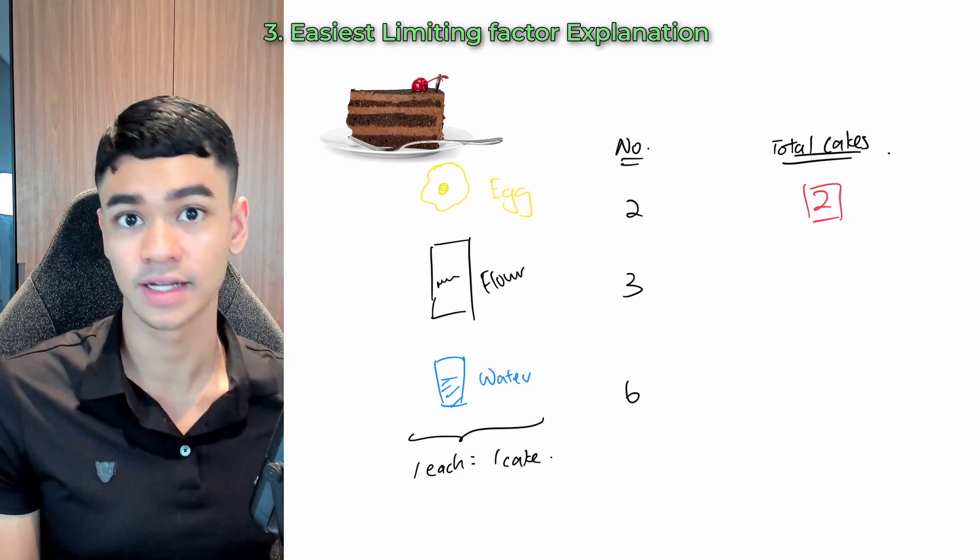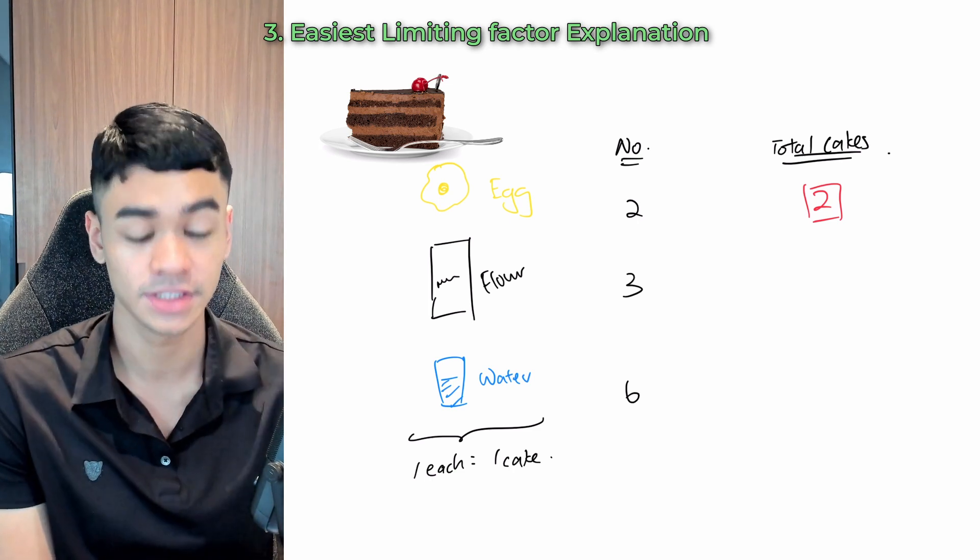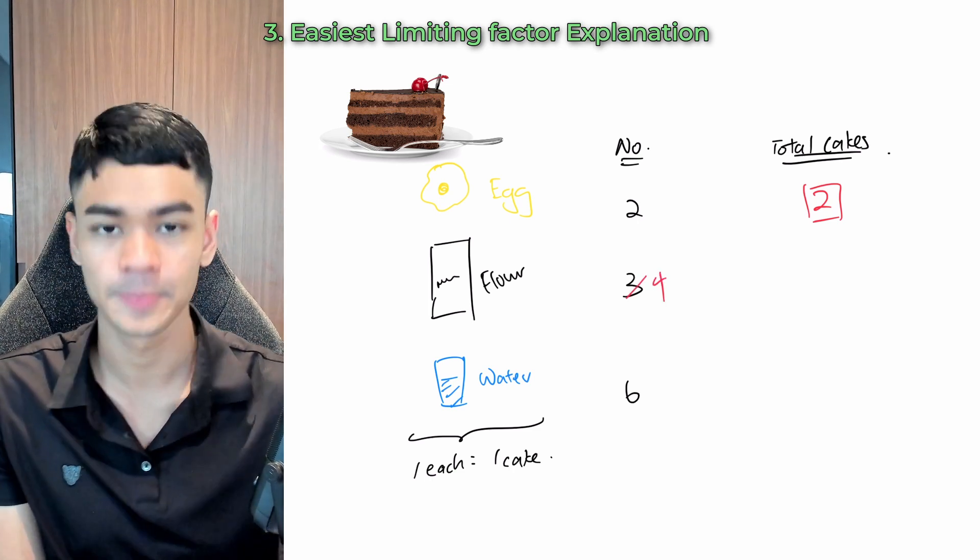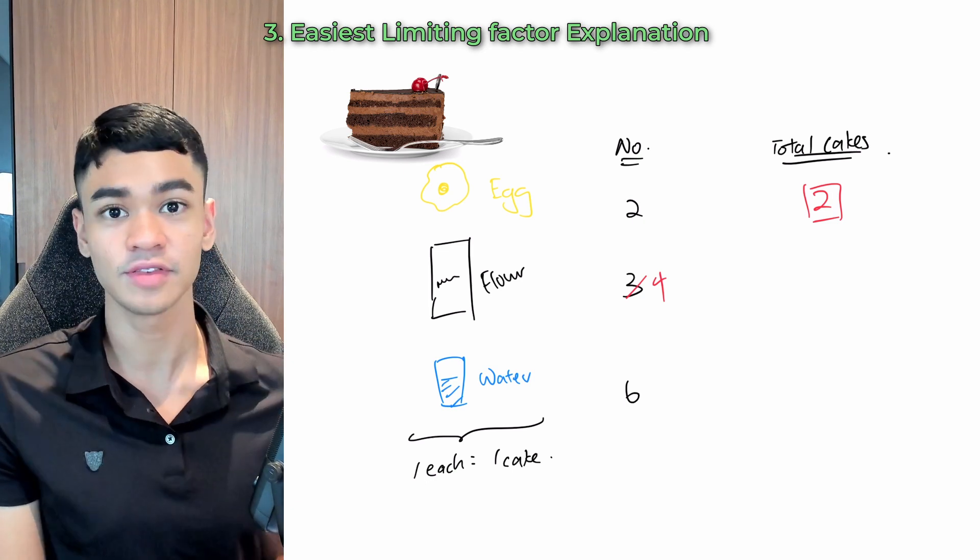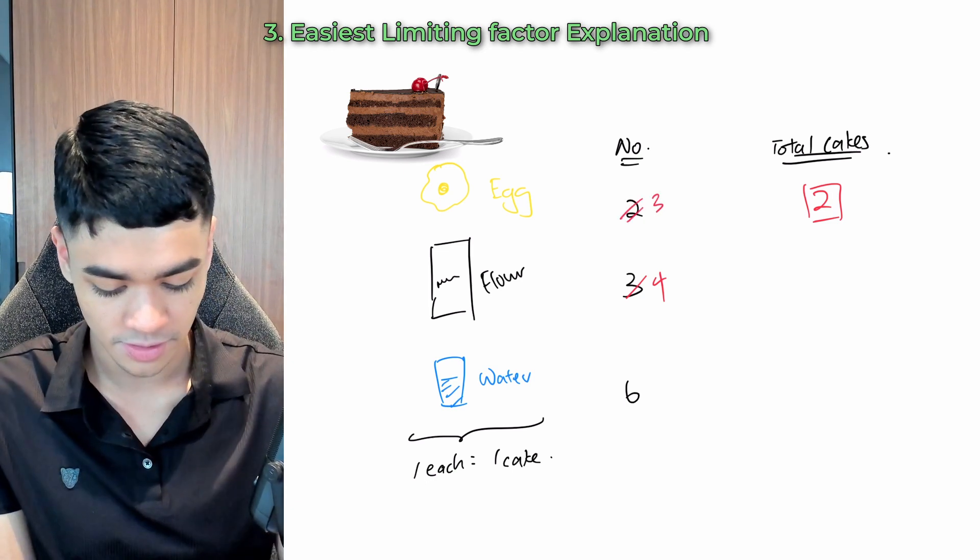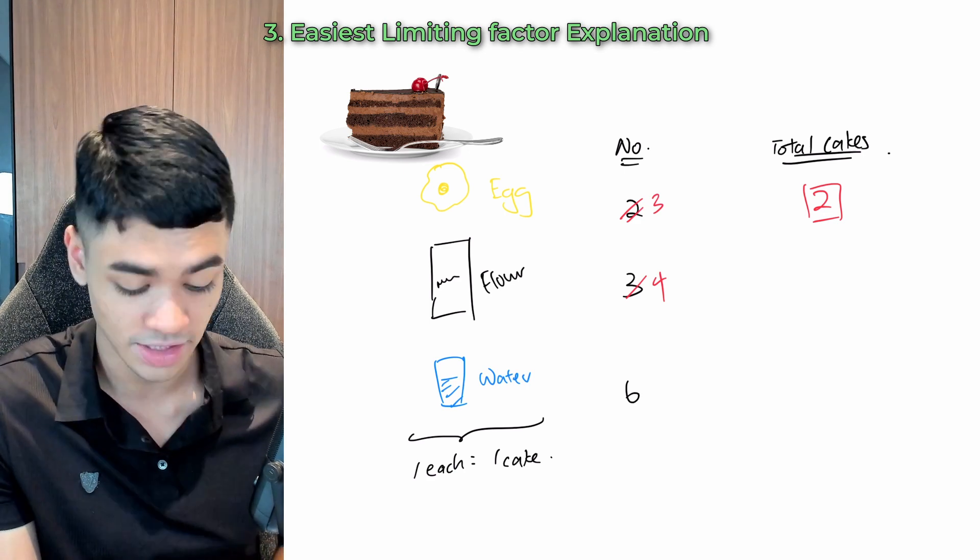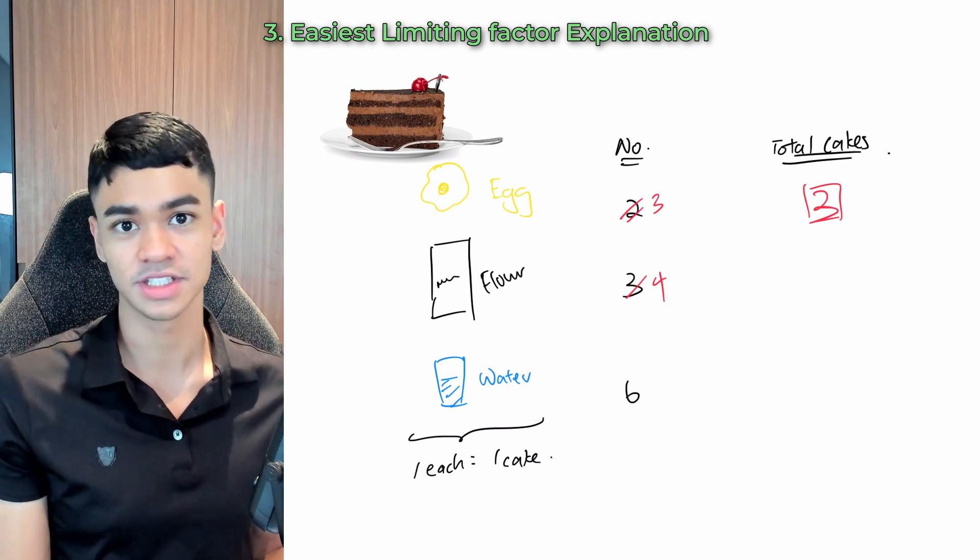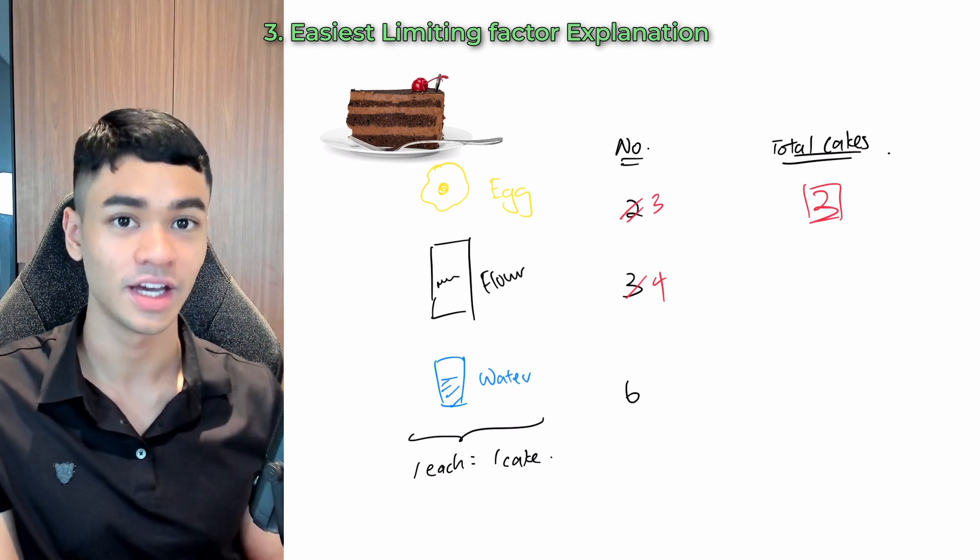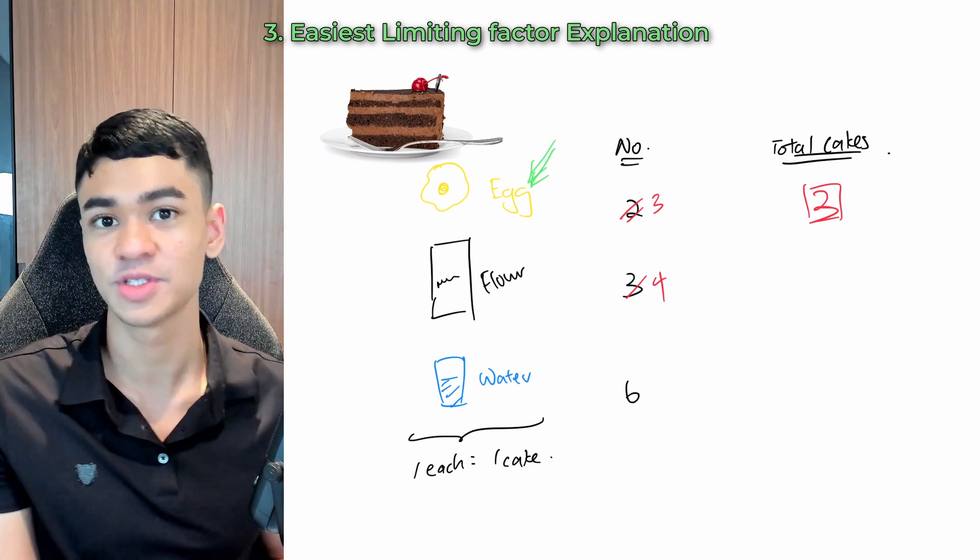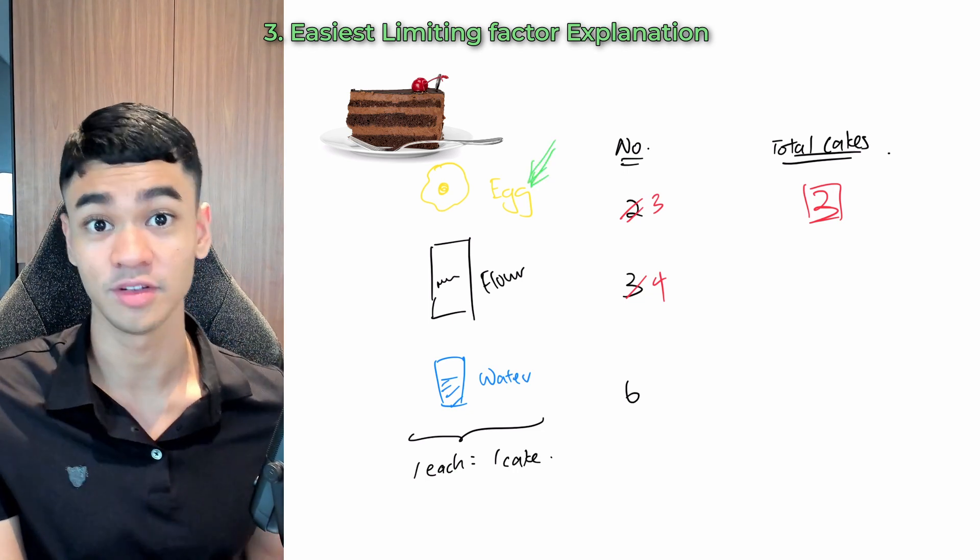So now here's my question. If I buy another packet of flour, can I make more cakes? So let's say I increase this to four, right? How many cakes can I make? The answer is still two. But if I increase the number of eggs to three, then how many cakes can I make now? Well, the answer is three. So which is the limiting ingredient? And if you answer eggs, then that means you already understand the concept of limiting factor.